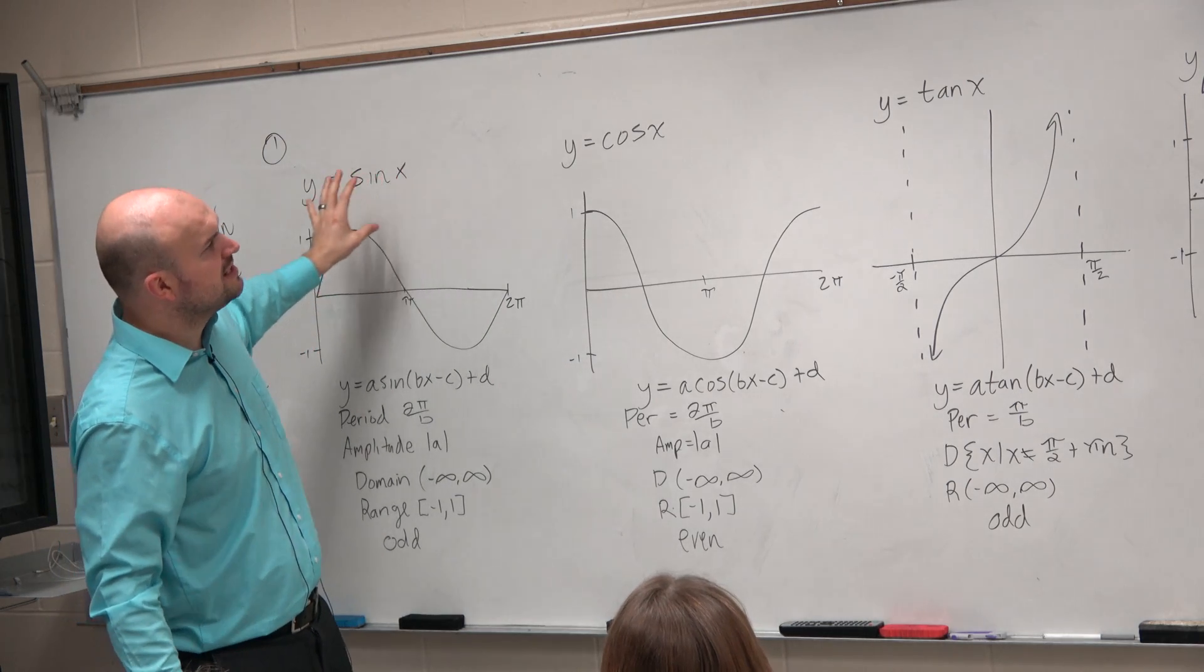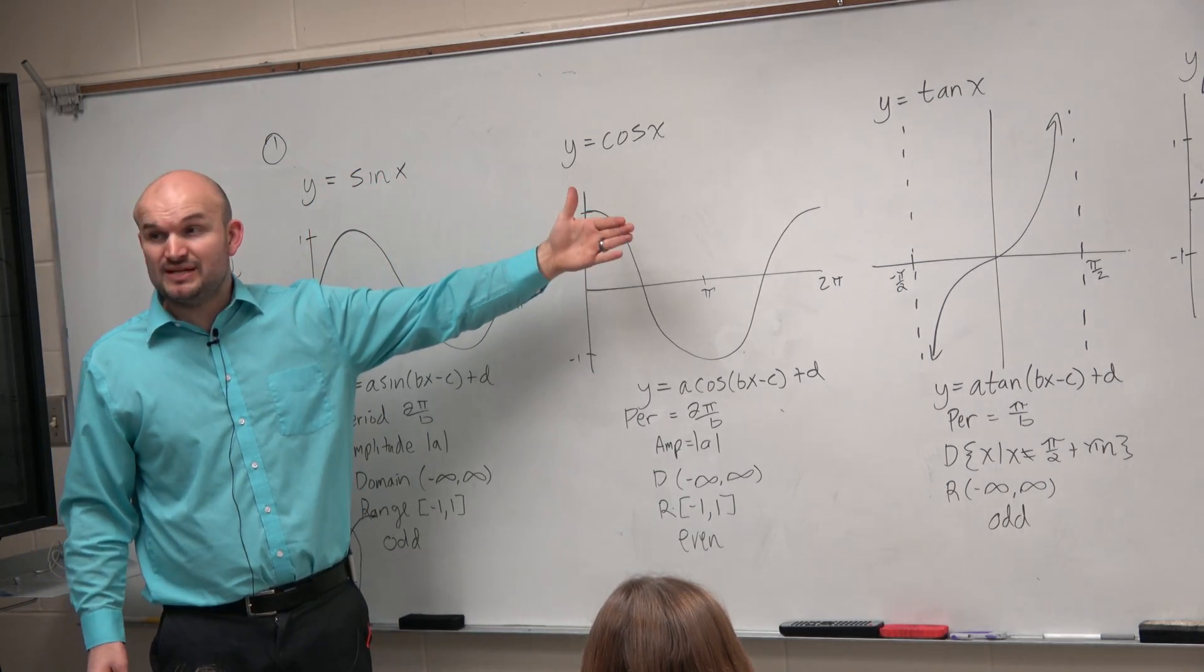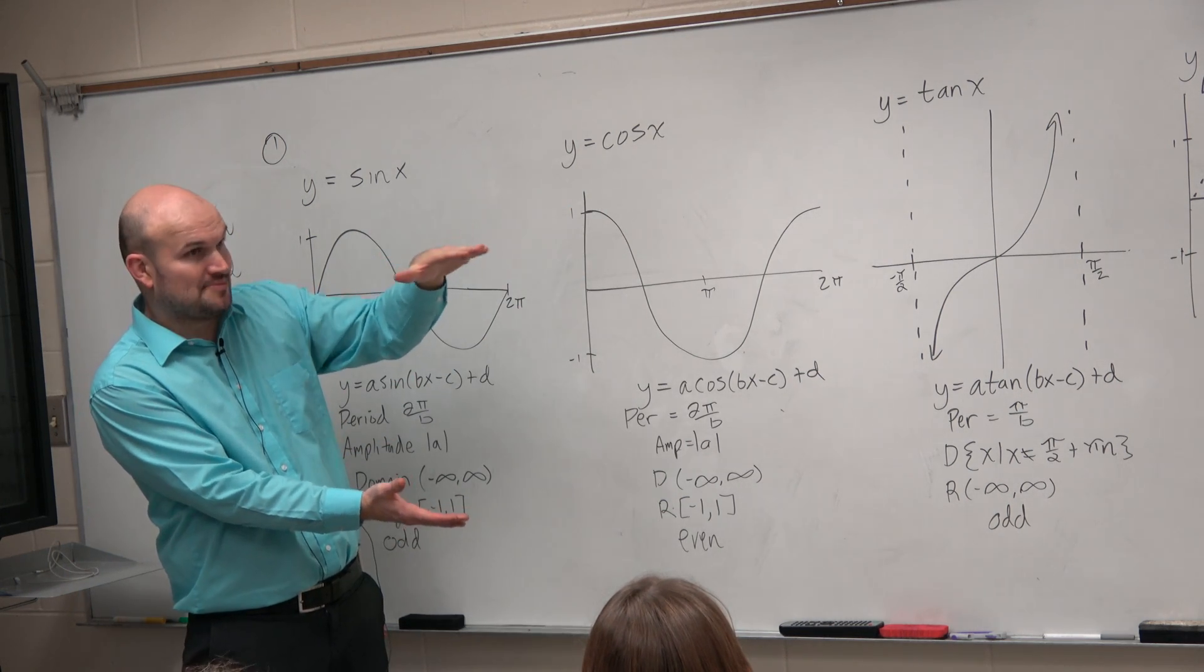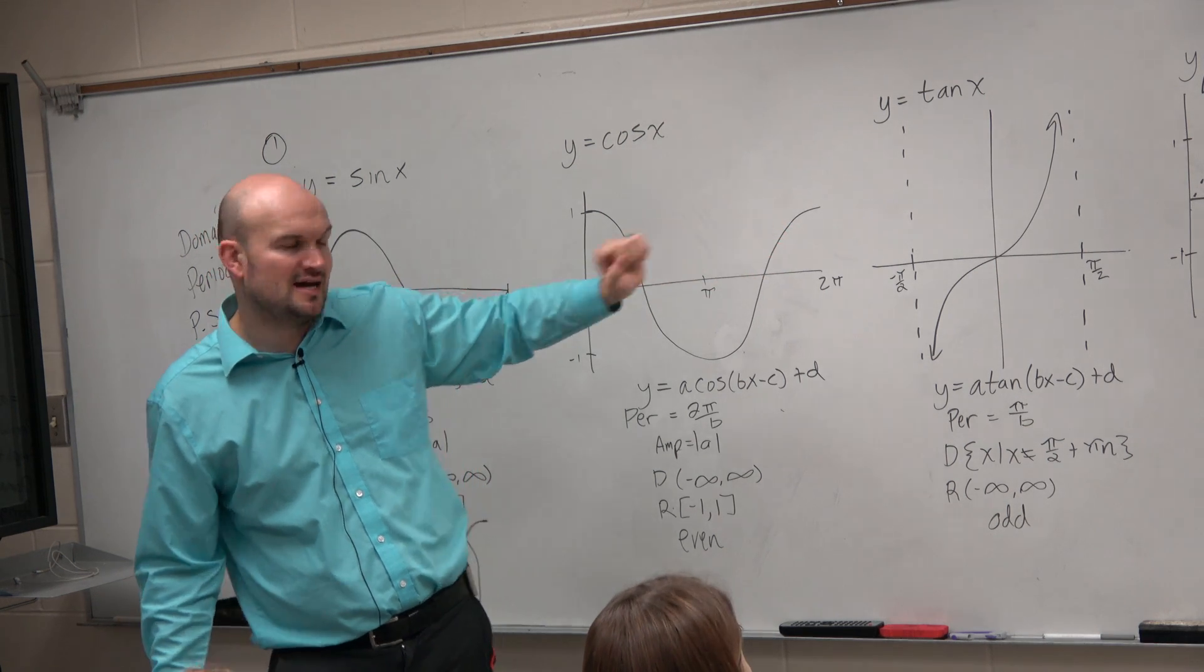And the reason that sine and cosine are the only ones that have an amplitude is because they're the only ones that is bounded. Right? These are the only ones that have an absolute max and absolute min. All the other graphs that we look at are unbounded. So they're not going to have an amplitude.